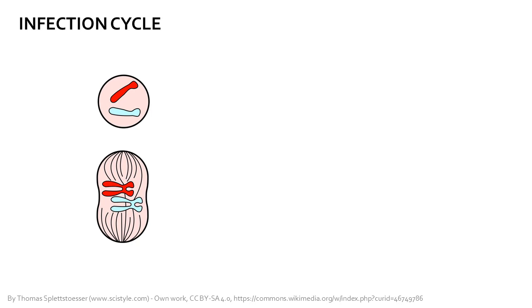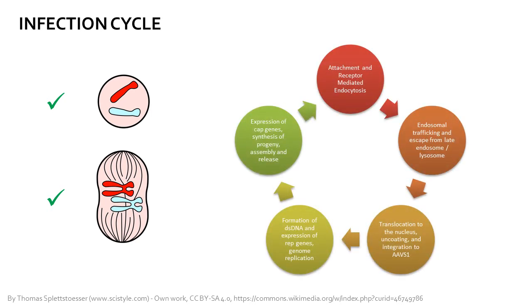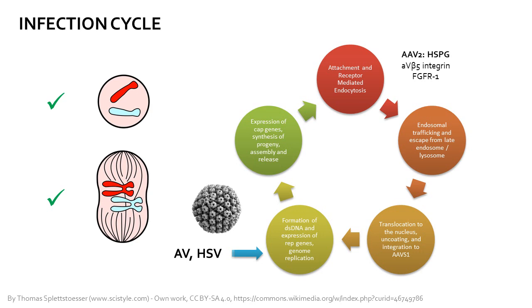Adeno-associated viruses can infect both dividing and quiescent cells, which makes them particularly interesting for gene delivery. The infection cycle varies from cell to cell; however, it generally follows a five-step process, which begins with attachment to the host cell via a given primary transmembrane receptor — for example, the heparan sulfate proteoglycan — and one or more co-receptors such as αV-β5 and FGFR1 in the case of AAV2. The attachment is followed by endocytosis and endosomal trafficking towards the nucleus, escape from the late endosome, and translocation into the nucleus where uncoating of the viral particle takes place. Assisted by the helper virus, the AAV, which either resides as an episomal concatemer or is integrated into the chromosome, can form a double-stranded DNA genome and begin expression of the REP and CAP genes, followed by assembly of the progeny and release from the cell.